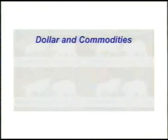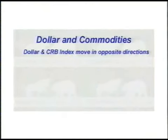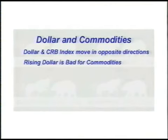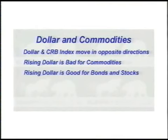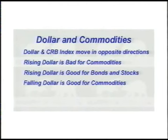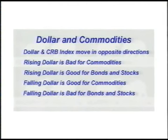Let's recap the material we just talked about. When we talk about the relationship between the dollar and commodity prices, the rule of thumb to remember is that they move in opposite directions. Therefore, a rising dollar is bad for commodity prices — however, a rising dollar is also good for bonds and stocks. A falling dollar is good for the CRB index and commodity prices — however, a falling dollar is bearish for bonds and stocks. So whether you're analyzing the stock market, the bond market, or the commodity markets, it's always a good idea to know what's happening in the U.S. dollar. In the next section, we'll be examining another crucial intermarket link — the link between commodity prices and bond prices.